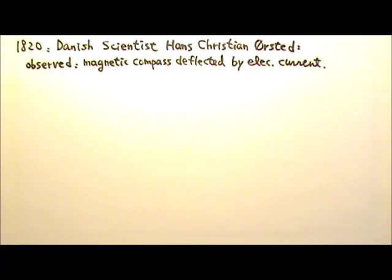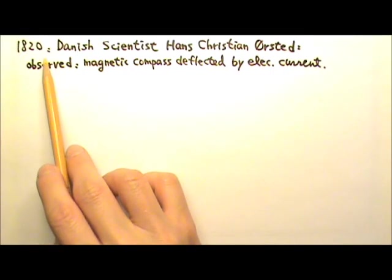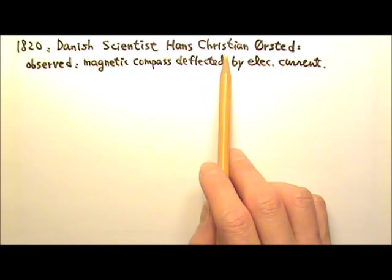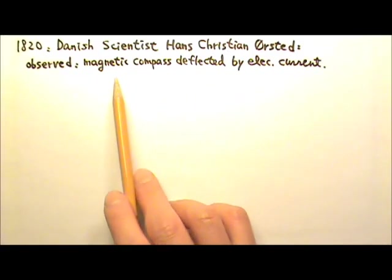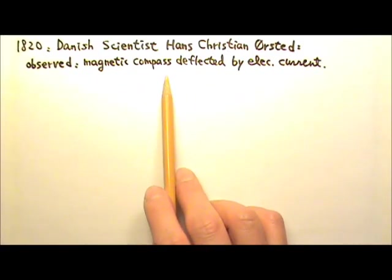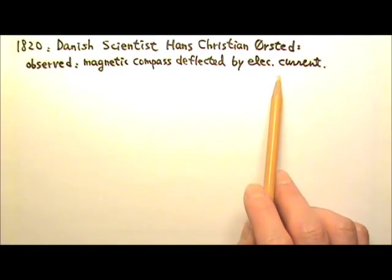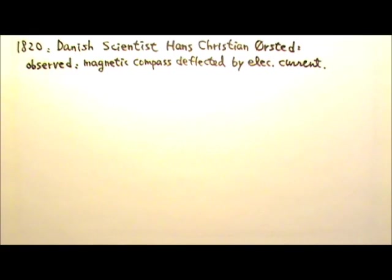It turns out that magnets are not the only things that produce magnetic field. In 1820, during a lecture, Danish scientist Hans Christian Ørsted noticed a magnetic compass deflecting when a nearby electric current from a battery was turned on. This showed that electric current can produce magnetic field, confirming a direct relationship between electricity and magnetism.